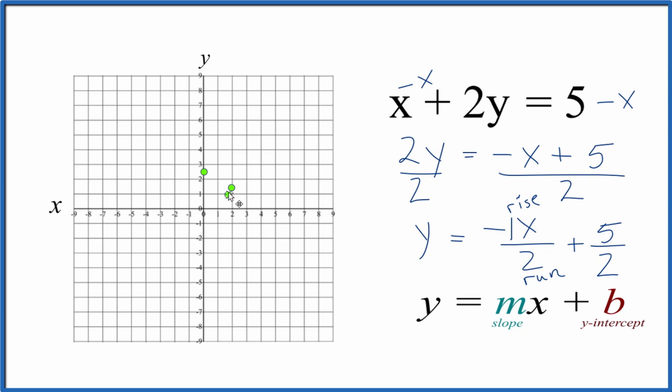Let's do a third one. Make sure we got this right. We go to our new point. We're going to go down. We're going to rise negative 1. Then we're going to go to the right, 2. Run 2 to the right.